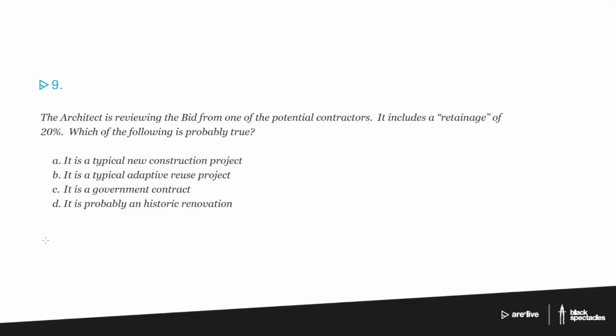The architect is reviewing the bid from one of the potential contractors. It includes a retainage of 20%. Which of the following is probably true? It's a typical new construction project, a typical adaptive reuse project, a government contract, or probably an historic renovation.